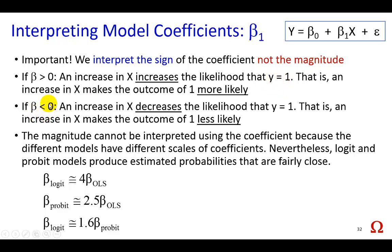Conversely, if the coefficient, β₁, is negative, then it's telling us that an increase in the value of x decreases the likelihood that y is equal to 1. In other words, it decreases the probability of success.